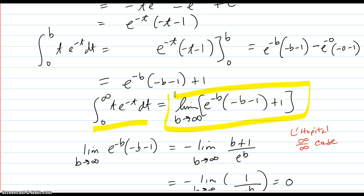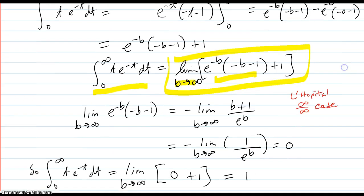But as b goes to infinity, it's not obvious what's happening right here. Because b goes to infinity, this goes to negative infinity. b goes to infinity, this goes to zero. Zero times infinity, we don't know where it's going.